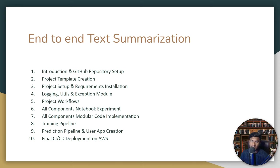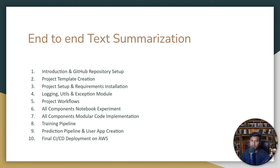We need to know what text summarization is and what we're going to do. Then we'll set up our GitHub repository for code management. After that, we'll do the project template creation because before implementing the project we need to set up the template — it defines the folder structure and code format we'll be following. Then we'll do the project setup and requirements installation, including the transformer libraries needed for the Hugging Face API.